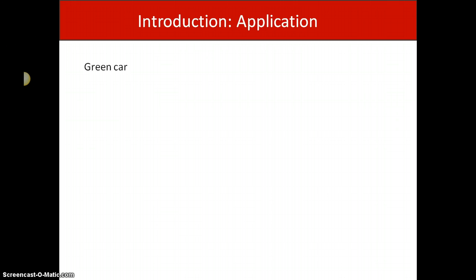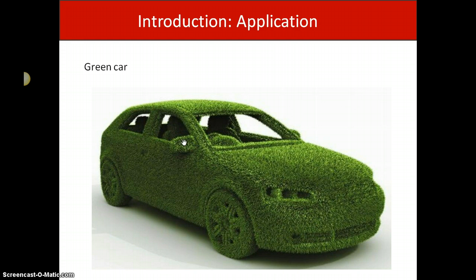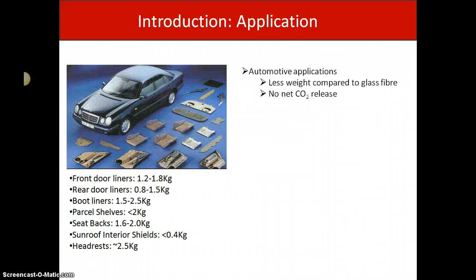The application — there's a lot of interest in automotive. They call it the green car. As you can see from the picture here, this is not what a real green car actually looks like. A green car is about using certain compartments of the car made from natural fiber. Natural fiber is used as a reinforcement agent for the composite because it has less weight compared to glass fiber, and there is no net carbon dioxide release.